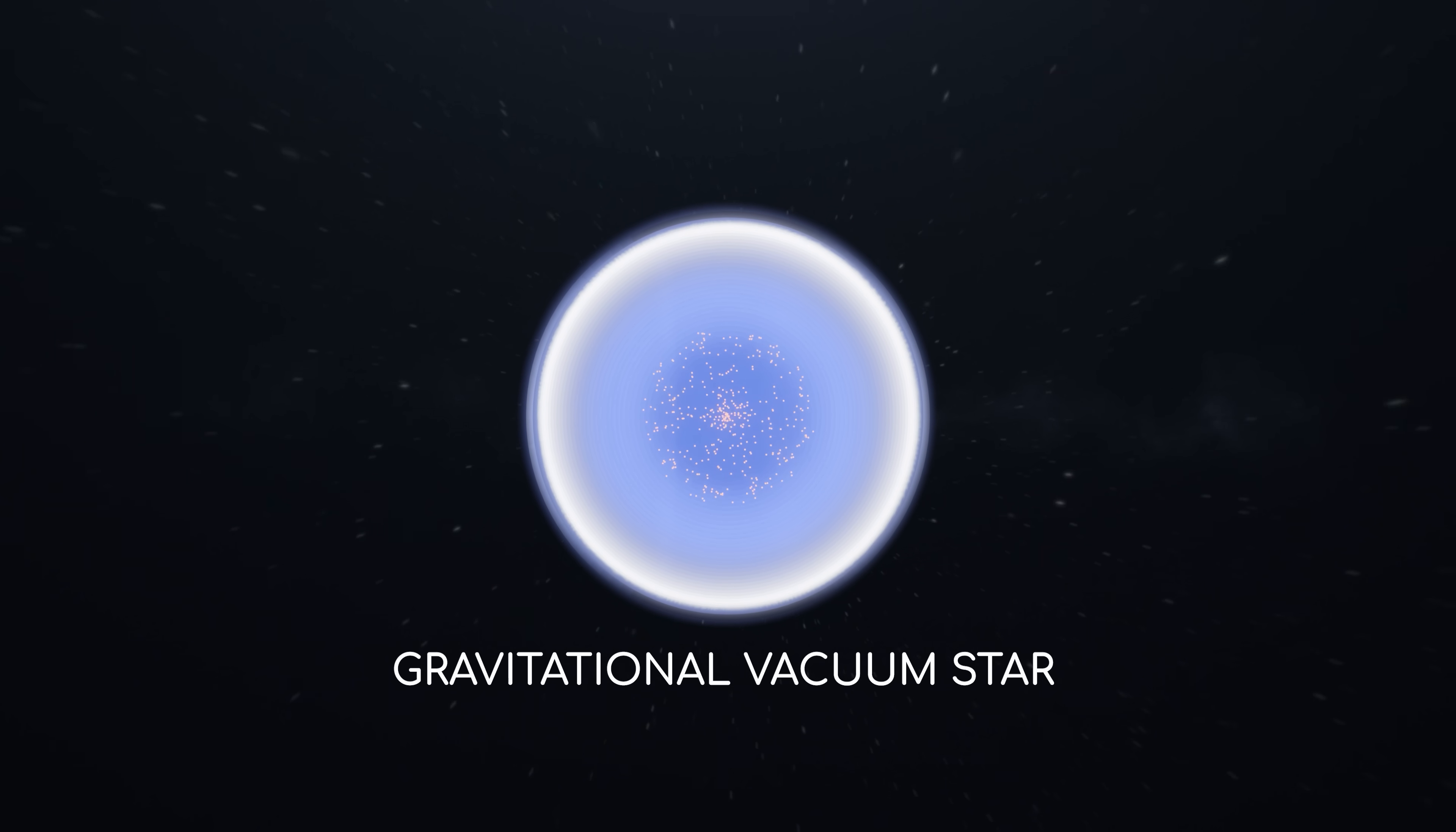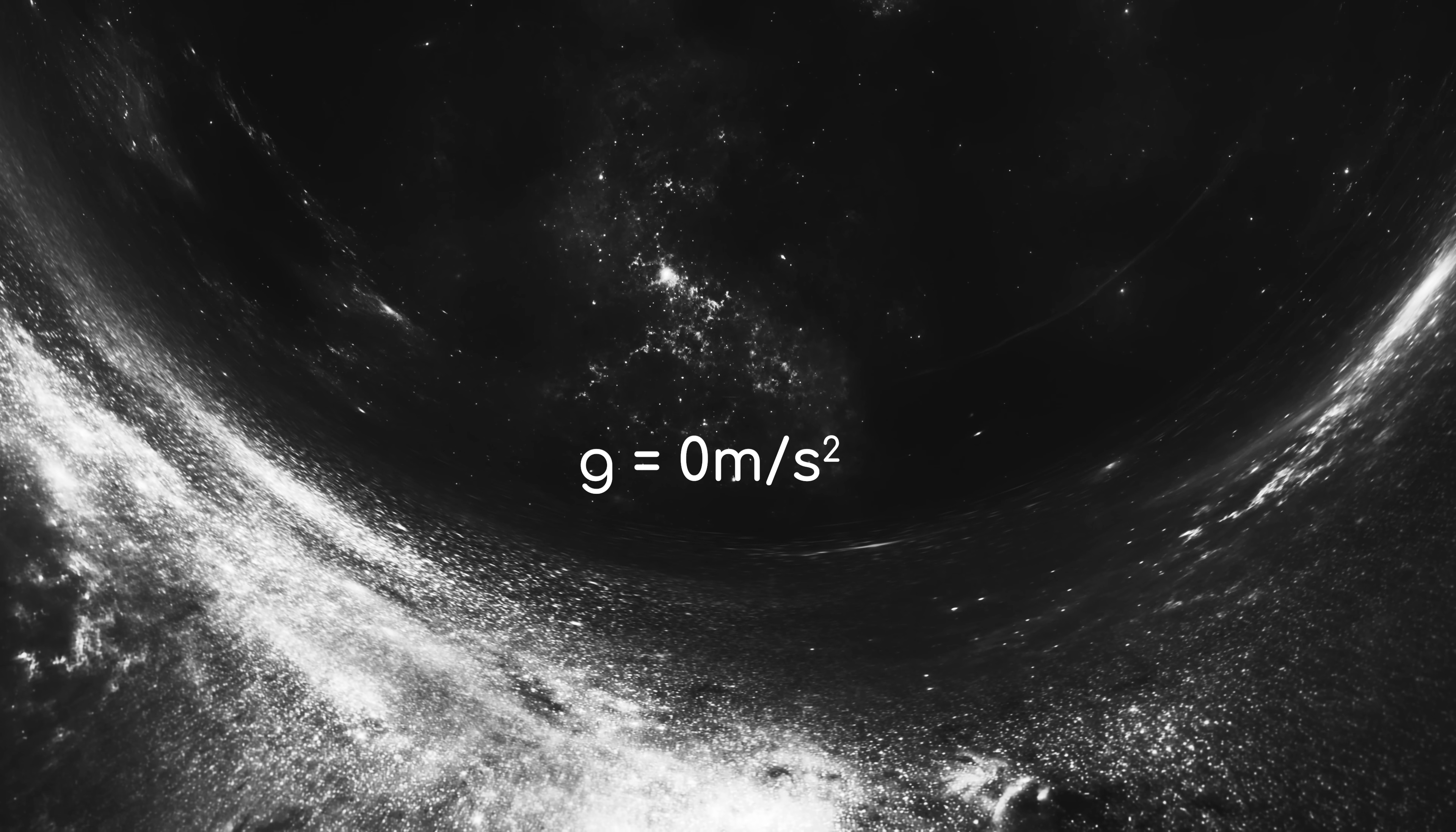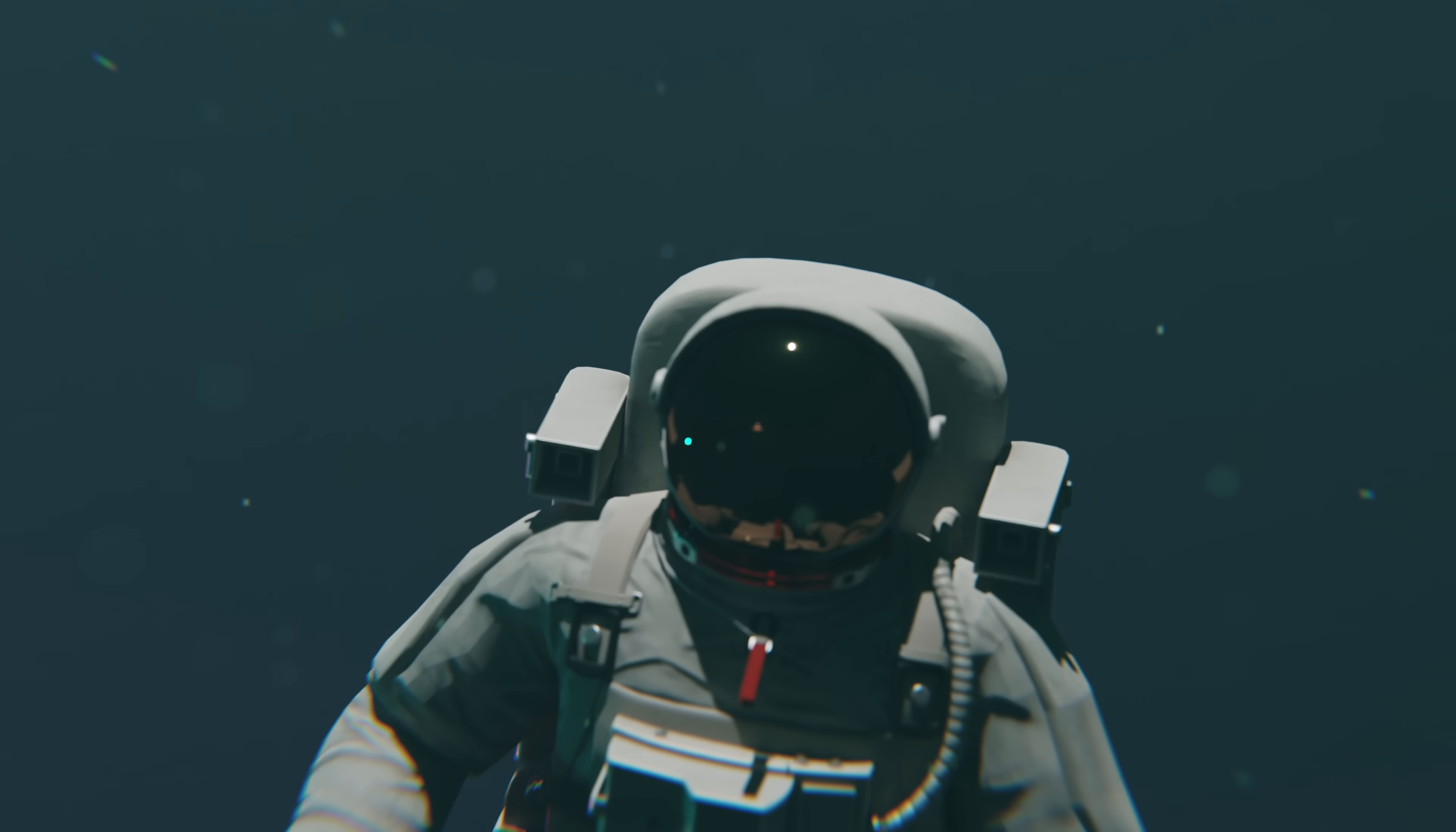Inside of a gravistar, there is precisely zero gravitational force, because the positive energy and negative pressure respectively exert a gravitational pull and push that cancel each other out. And since the pressure in gravistar is constant, there is no pressure gradient to exert any sort of push in one direction or another either. This means that if you found yourself inside of a gravistar, you would neither be pulled in nor pushed out. You could float freely, just as though you were in a real vacuum.